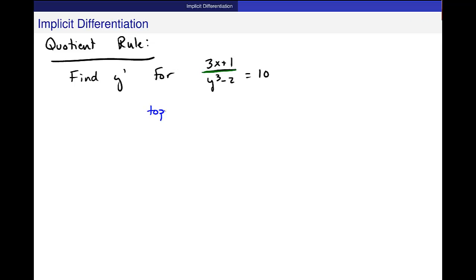The top here is 3x plus 1 and the derivative of the top is 3. Bottom y cubed minus 2 and the derivative of the bottom is equal to 3y squared and then times y prime, right? So that same chain rule coming into play over and over again in this particular case.